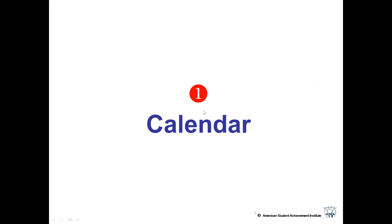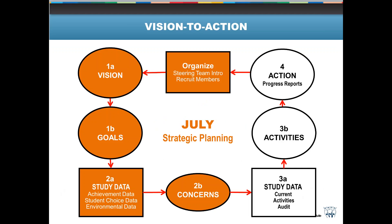We'd like to start out by looking at a calendar for the year. Remember that we started out in July updating your strategic plans, so this part of the process is already finished. We've updated your strategic plan — you have an updated vision, updated goals, and updated concerns.